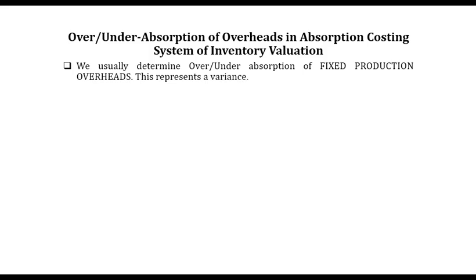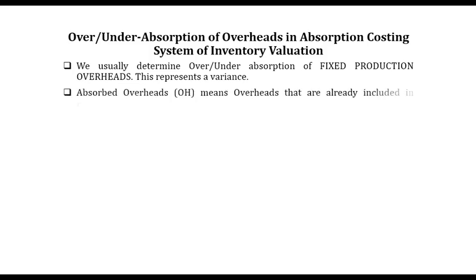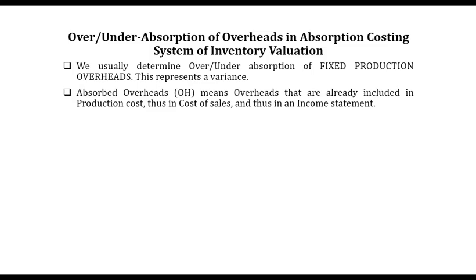We usually determine over and under absorption of fixed production overheads, and this represents a variance. So what are absorbed overheads? Absorbed overheads represent overheads that are already included in the production cost — thus, in cost of sales — because production cost is part of cost of sales, and cost of sales is part of an income statement.